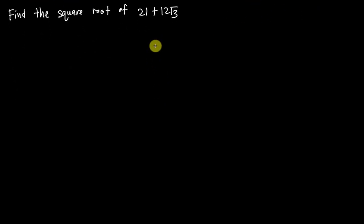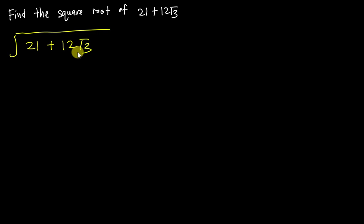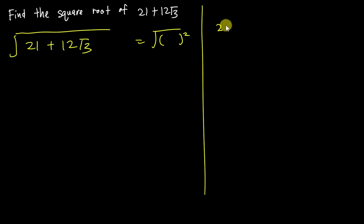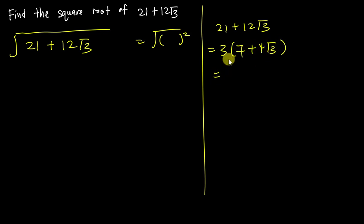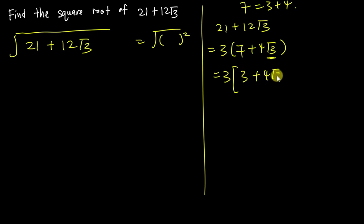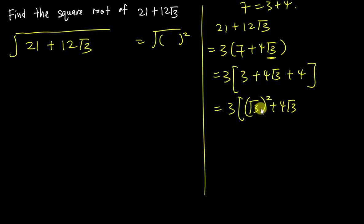To make sure you fully understand, let's do one more example together. We want to find √(21 + 12√3). Our objective is to get a bracket squared inside. I start with 21 + 12√3 — both numbers are divisible by 3, so I factor out 3: 3(7 + 4√3). I don't want just 7; I want something related to 3. Since 3 + 4 = 7, I rewrite as 3(3 + 4√3 + 4).